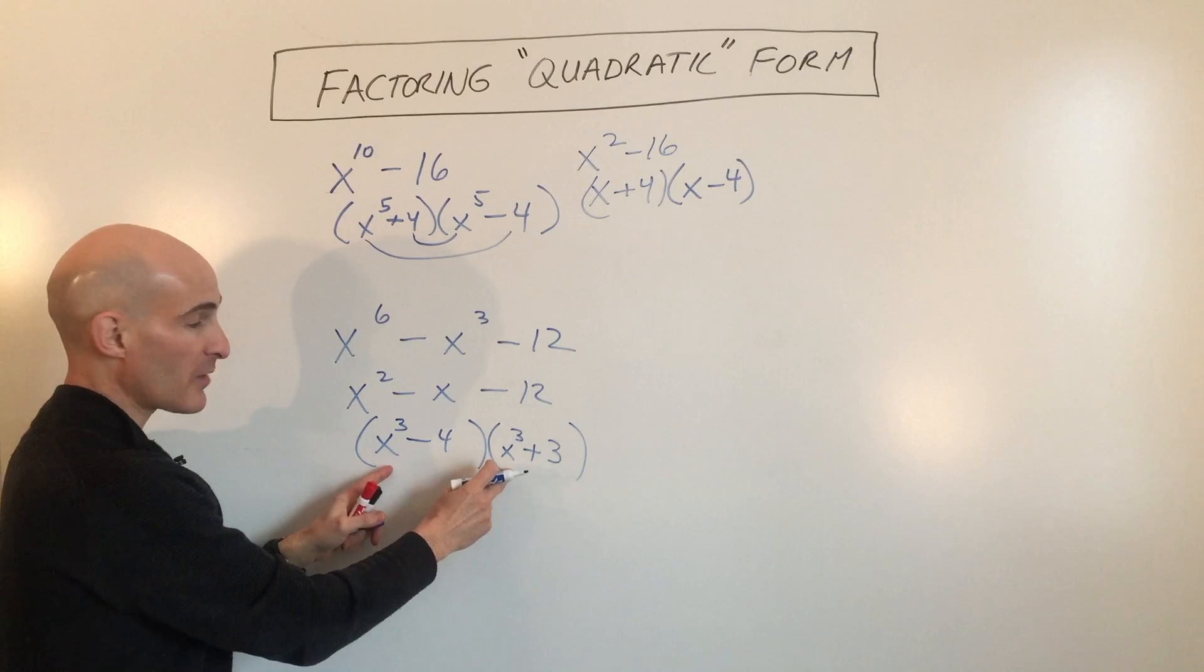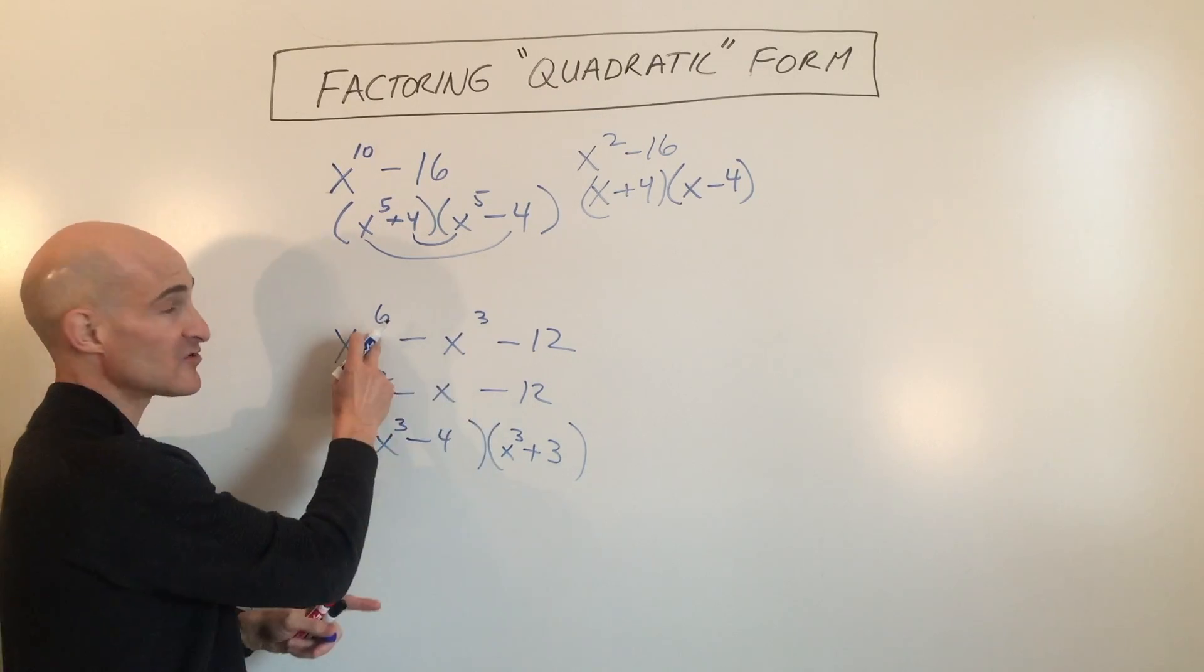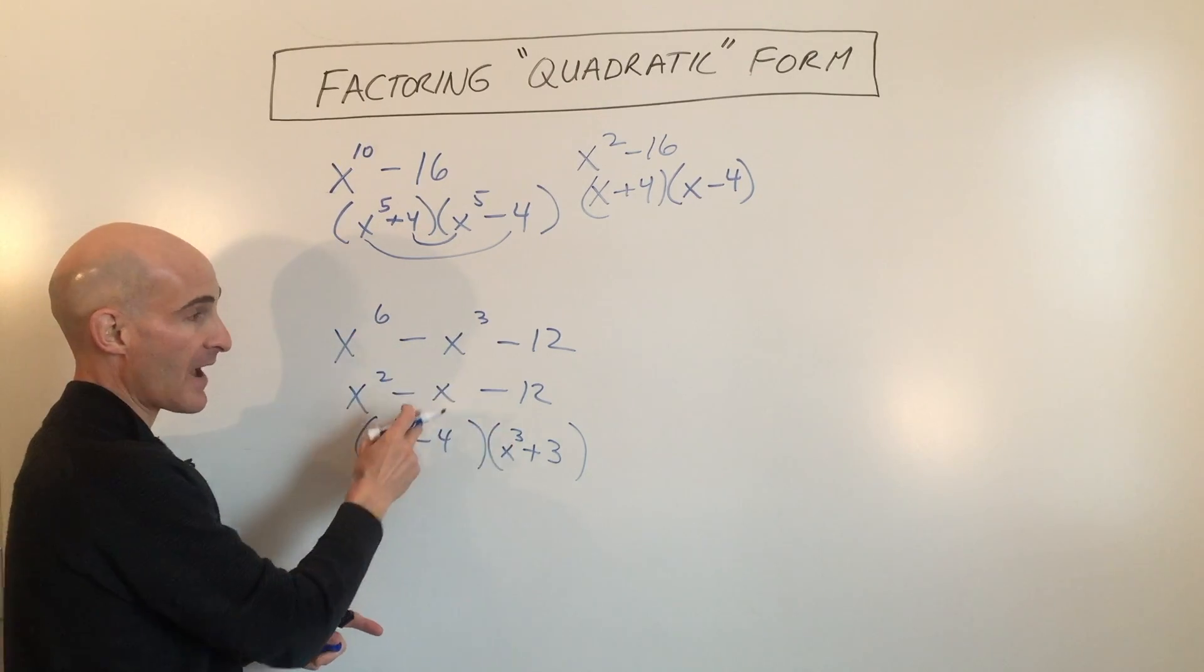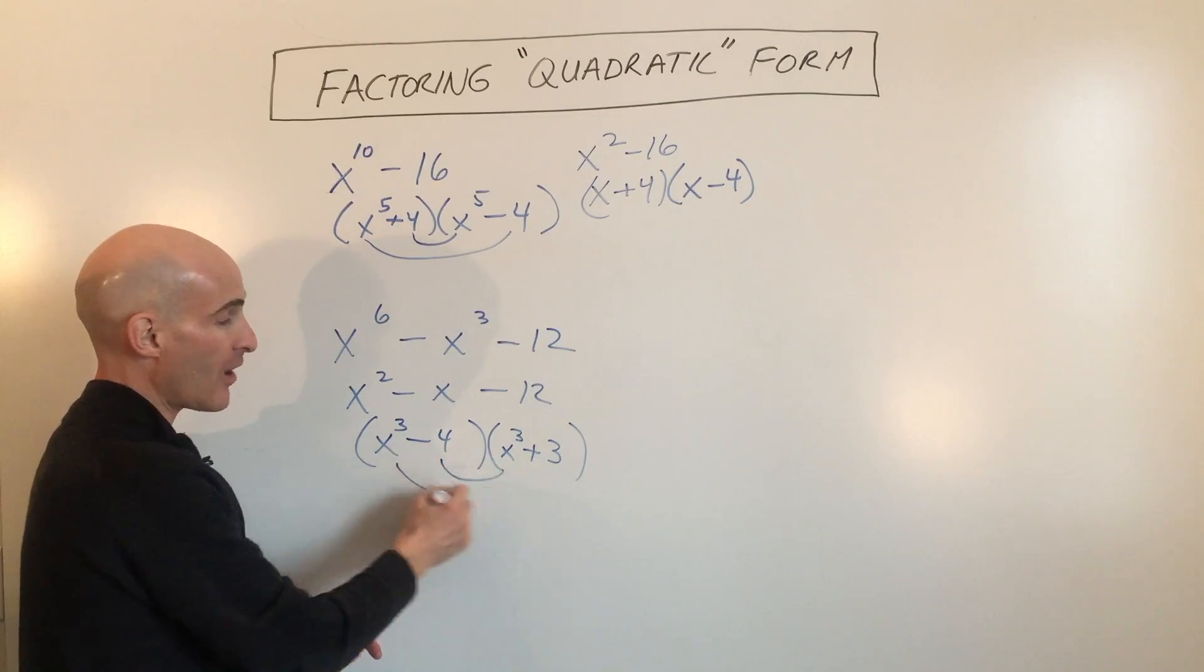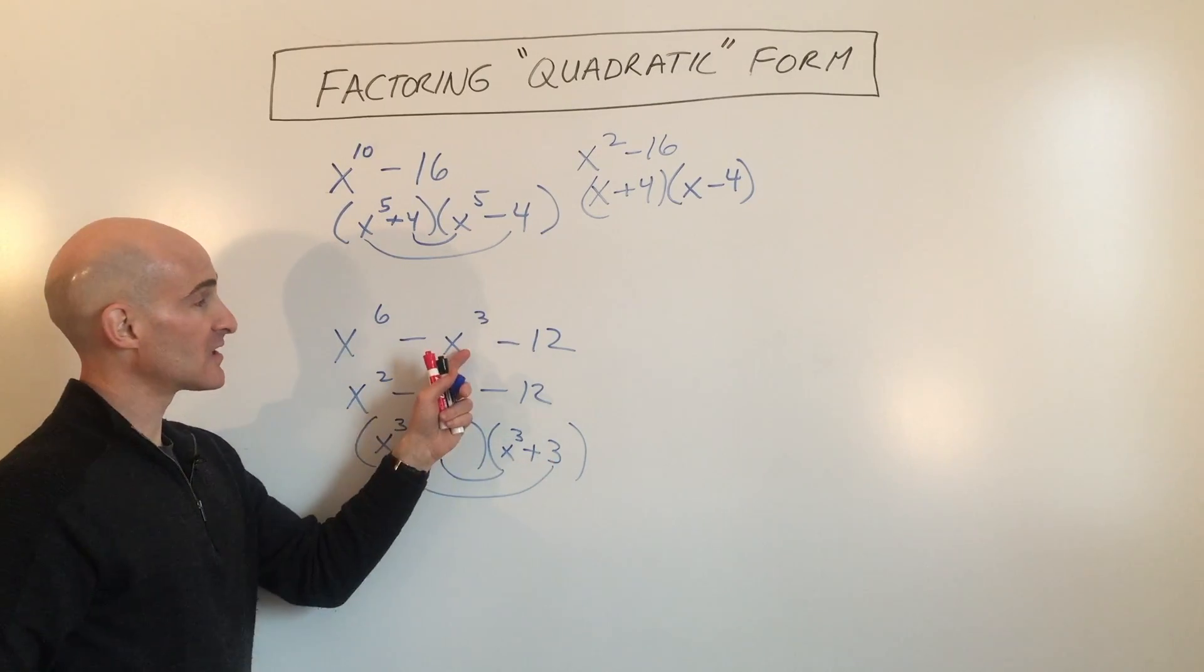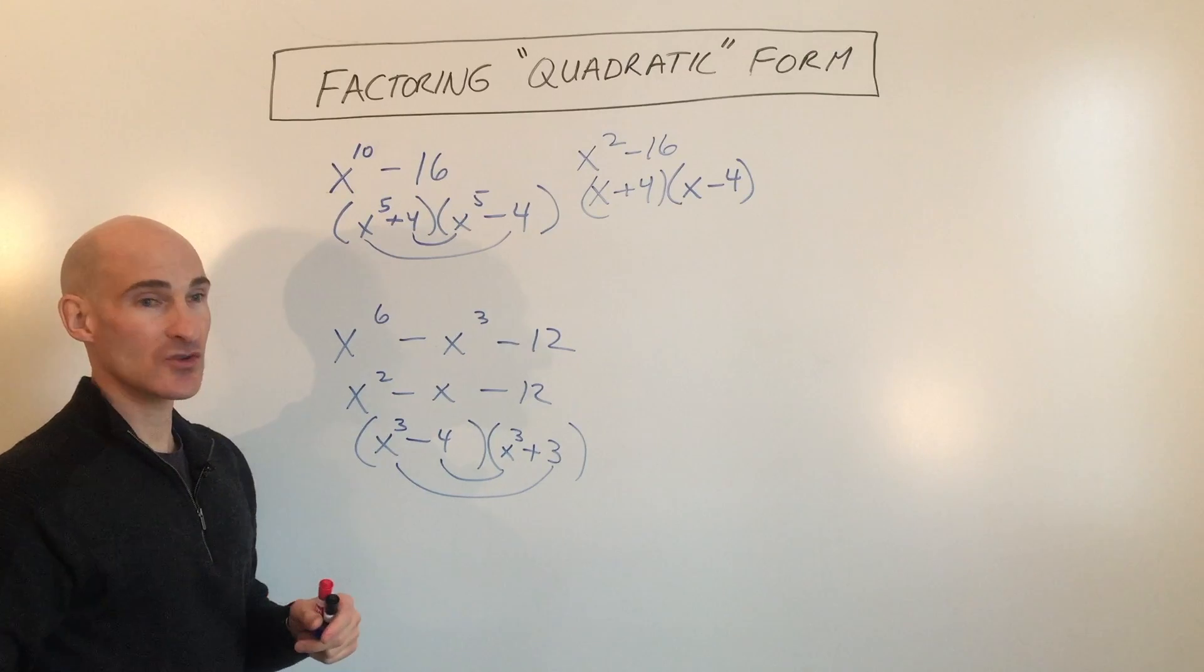And you can see when you multiply these together, x cubed times x cubed gives you x to the 6th because when you multiply, you add. And when you do the inner and the outer products, you're going to get the middle term of negative 1x cubed.